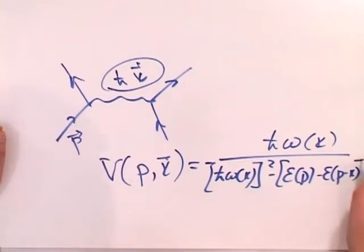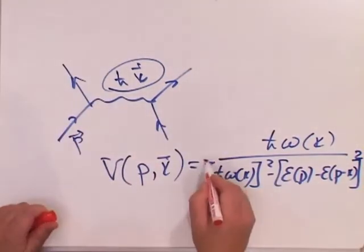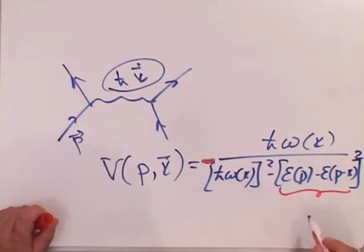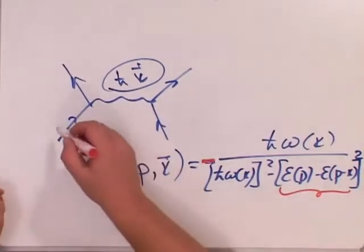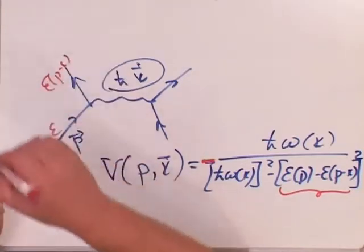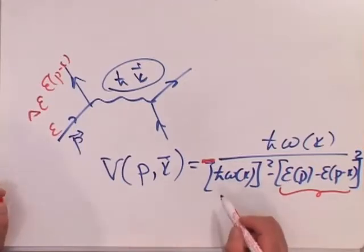So let's analyze this formula. First of all, I see that it is negative only when this part, so this is a difference between the initial and final energies of electrons, this is a difference of energies, is less than phonon energy.